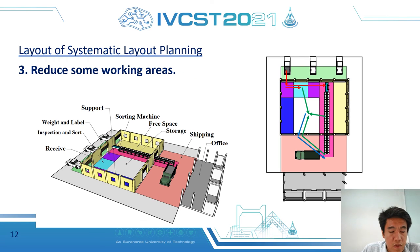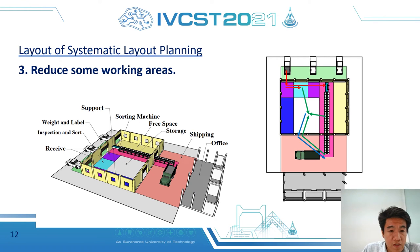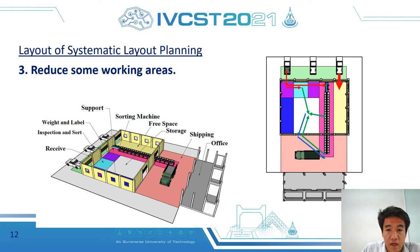The third concept reduces some working areas. The inspection area and weighing area are reduced, and the sorting machine is placed at the front of the building. This layout has free space between the building wall and the machine because there is no back door beside the wall, and work is done on both sides of the building in the closed and semi-closed areas.